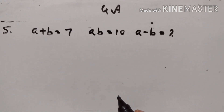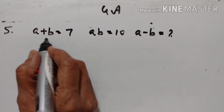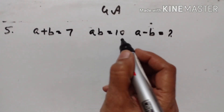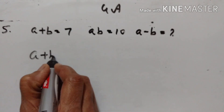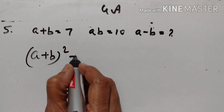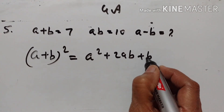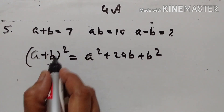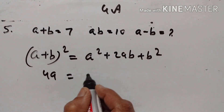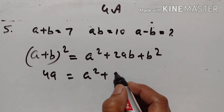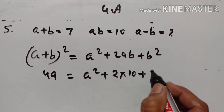Hello students, welcome back. Let's continue with Exercise 4a, fifth problem. A plus B is equal to 7, AB is equal to 10. What is the value of A minus B? Using the identity: (A+B)² = A² + 2AB + B². So (A+B)² equals 7² which is 49 = A² + 2 × 10 + B².